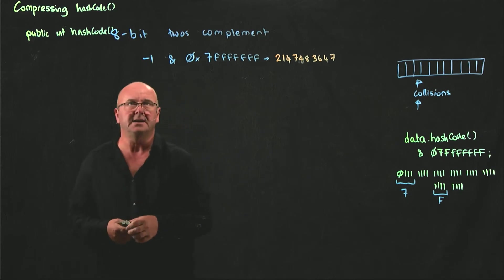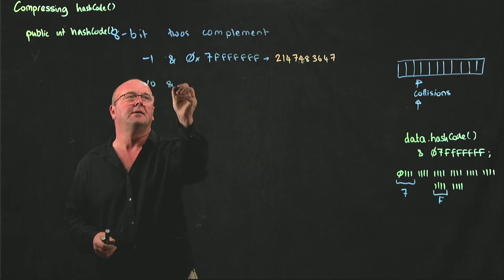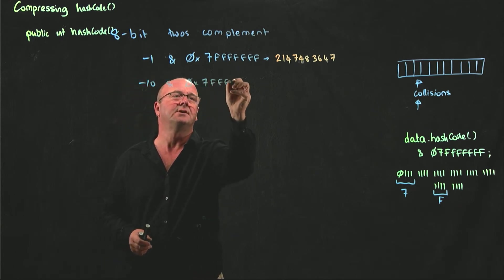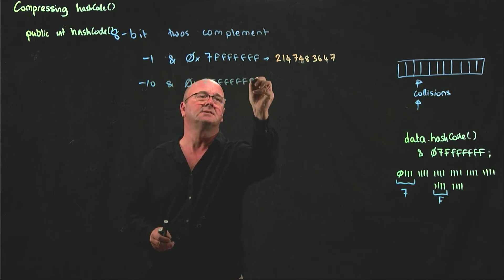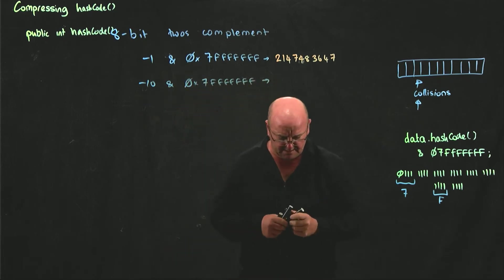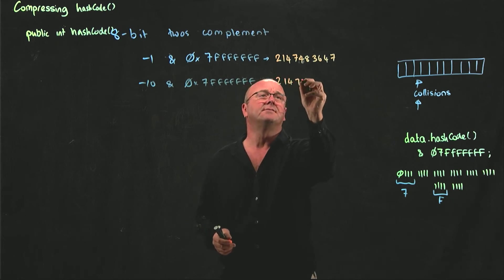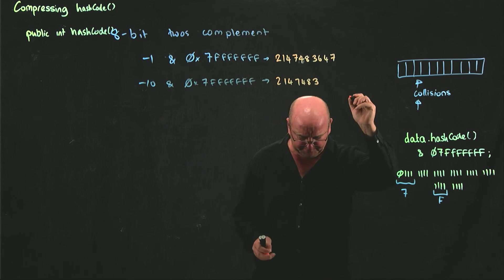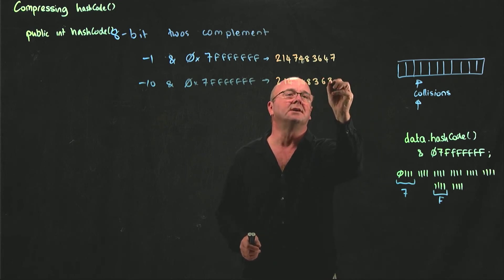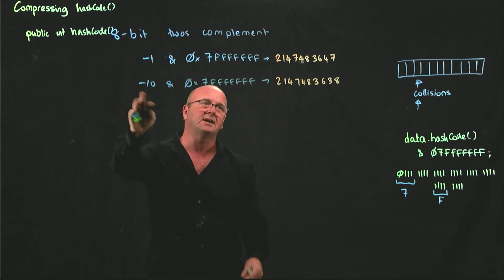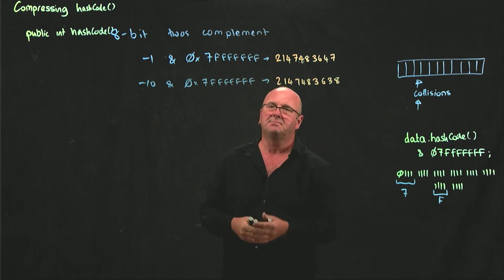If we take minus 10, then we AND it with 0x7FFFFFFF, we end up with 2147483638. So we're ending up with a very large positive number. So even though we start with a small negative number, we end up with a very large positive number.